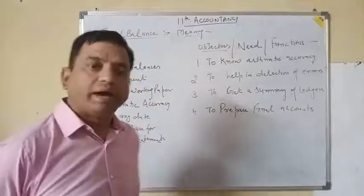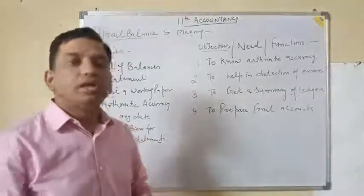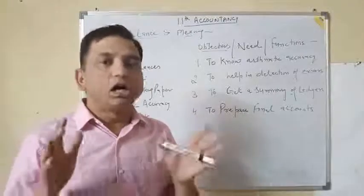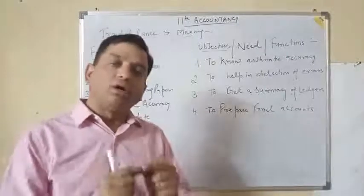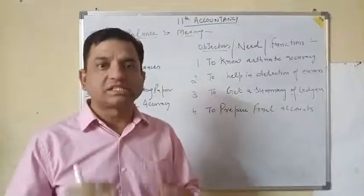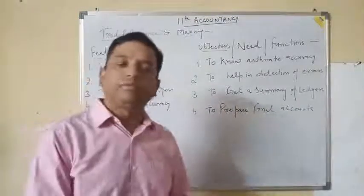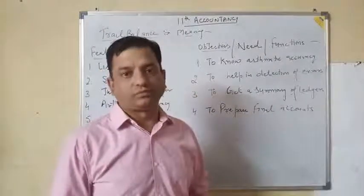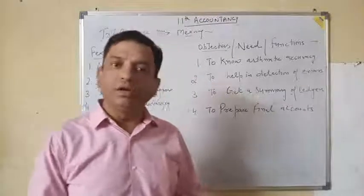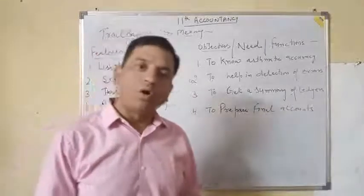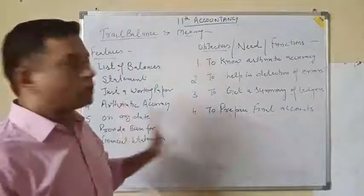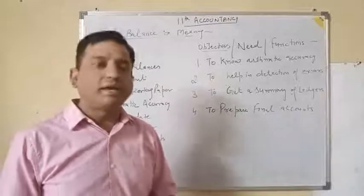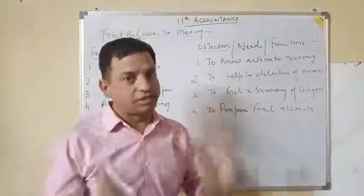The next step in the series is Trial Balance. First, we will discuss what is the meaning of trial balance. Trial balance is a statement which is prepared by taking all the closing balances of all the ledgers — the balances at the end — which will automatically become the opening balance of the next period. For example, the closing balance of any ledger on 31st March 2018 will become the opening balance of that ledger on 1st April 2019. Trial balance is a statement prepared to make a summary of all the ledgers by taking their closing balances.